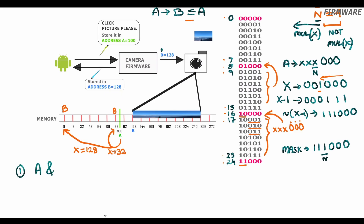We do an AND operation between a and this mask (inverted x minus 1). The bits to the right of the nth position in a become zero and the remaining bits are unchanged. So our answer is a AND ~(x−1). Also, from our episode on subtracting one from a number, the inversion of x minus 1 is the same as negative x, so our answer is equivalently a AND (−x). Both expressions give us the required floor byte alignment.